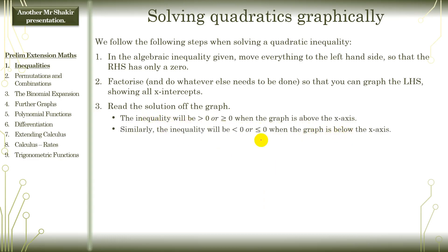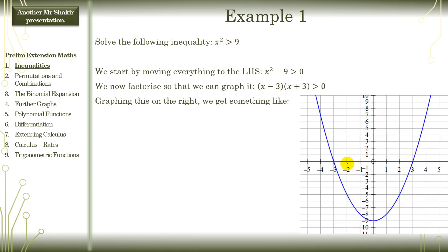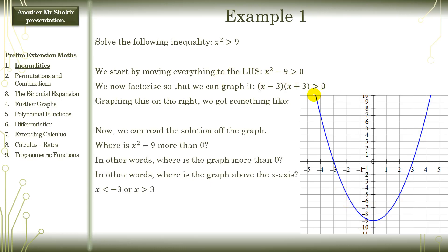If it's more than or equal to zero, it'll be above the x-axis; if it's less than or equal to zero, it'll be below the x-axis. For example, let's say you have x² > 9. Step one: move to the left, factorize, and graph. It'll look something like this. If you know curve sketching at all, the zeros are at 3 and negative 3. It's a concave-up parabola because x² has a positive coefficient — concave up means a smiley face. Once you have that graph, we want to know where it's more than zero, i.e., where the graph is above the x-axis. Clearly, it's x < −3, and similarly when x > 3, it's above the x-axis. That is the idea — very simple.